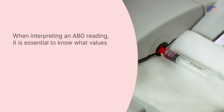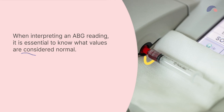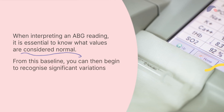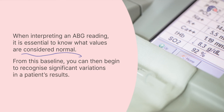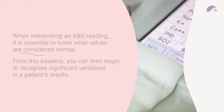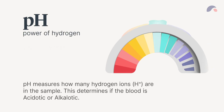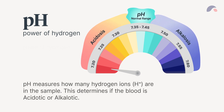When interpreting an ABG reading, it is essential to know what values are considered normal. From this baseline, you can then begin to recognize significant variations in a patient's results. The first value is the pH, power of hydrogen, which measures how many hydrogen ions are in the sample. This determines if the blood is acidotic or alkalotic.